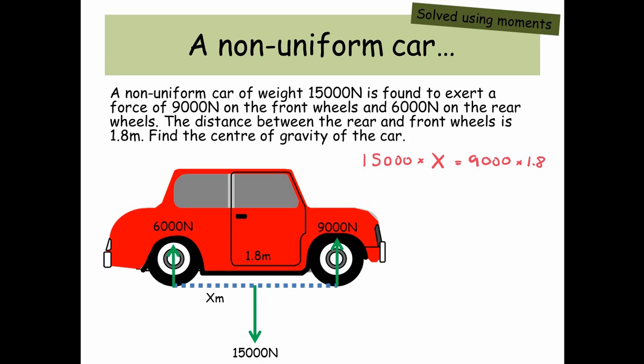There's no reason why we couldn't take the moments about the front wheel or even about the center of mass if we wanted to. Just if we use one of them, like one of the forces, we can get rid of that moment produced by that point. So we're just going to take the moments about the rear wheel. Okay then x is 9,000 times 1.8 divided by 15,000 and we get 1.08 meters from the rear wheels or 0.72 meters from the front wheels.